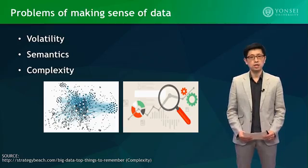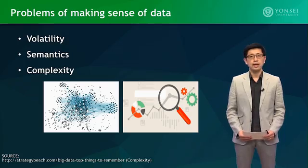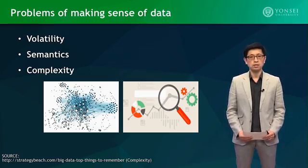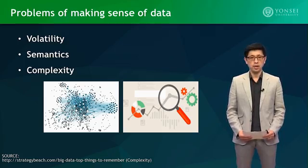The last but not least issue is complexity. Today's data comes from multiple sources, and it is still an undertaking to link, match, cleanse, and transform data across systems. Together with the ambiguity of text, the complexity issue becomes even more difficult.